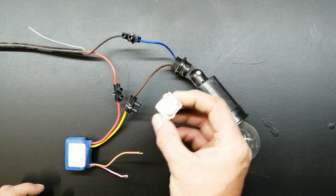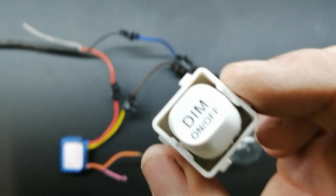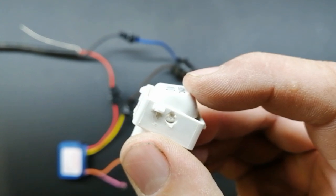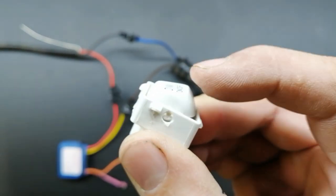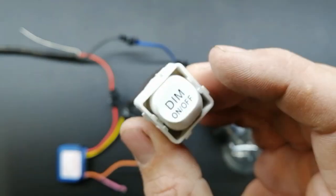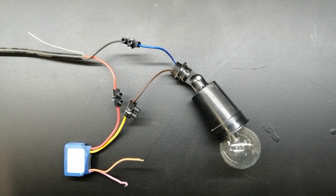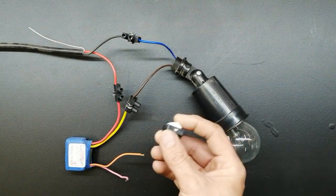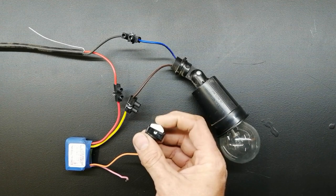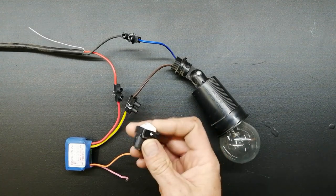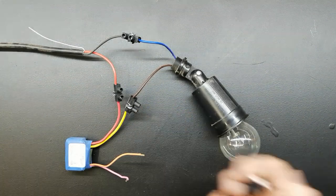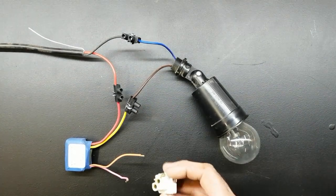The switch you're going to need is one of these spring return switches. If you can see, it says dim, on, off. If you switch this one, it jumps back to the original position. This is what you'll need for the dimmer. A normal switch you can use, but it doesn't jump back to its original position, so it's not the best way to do it.